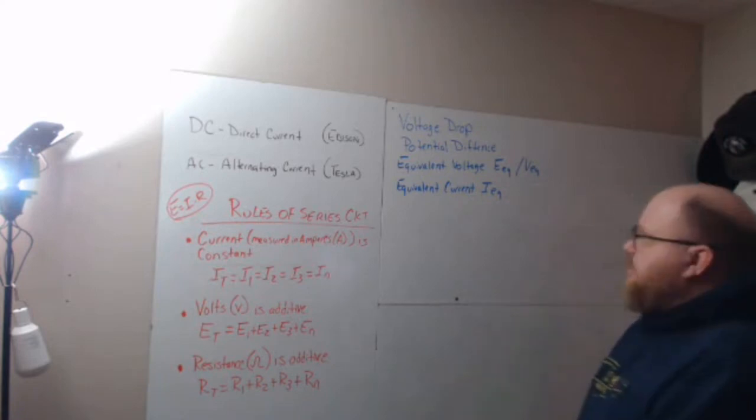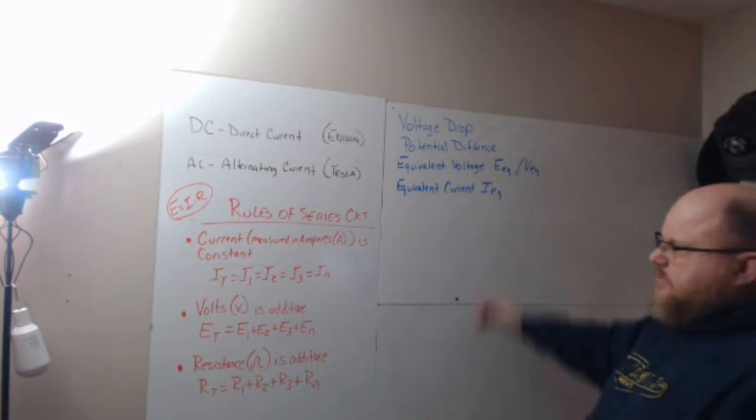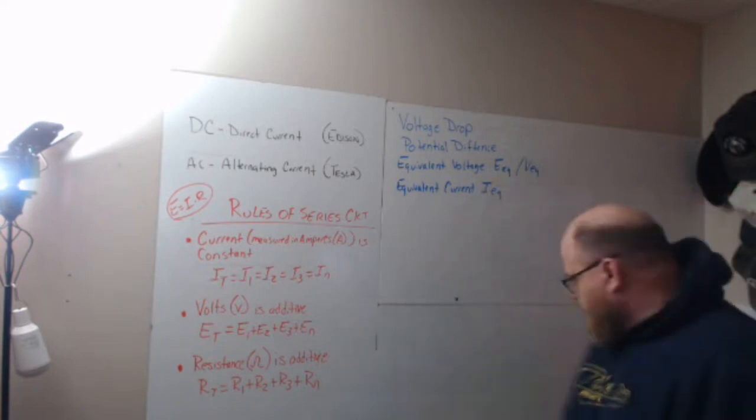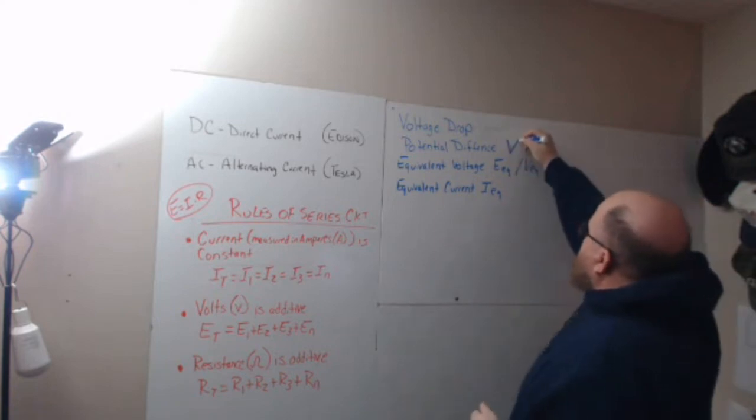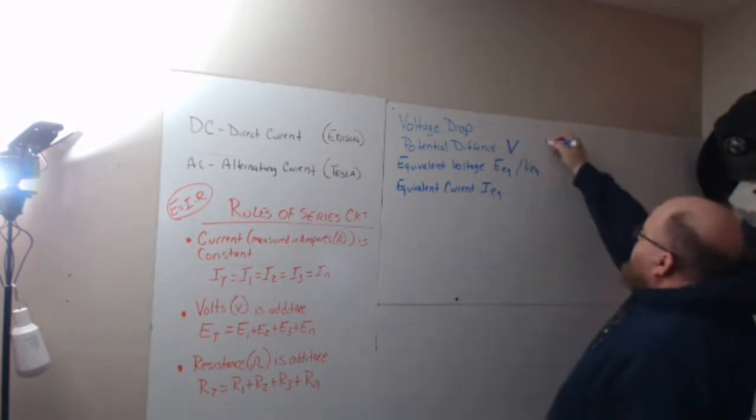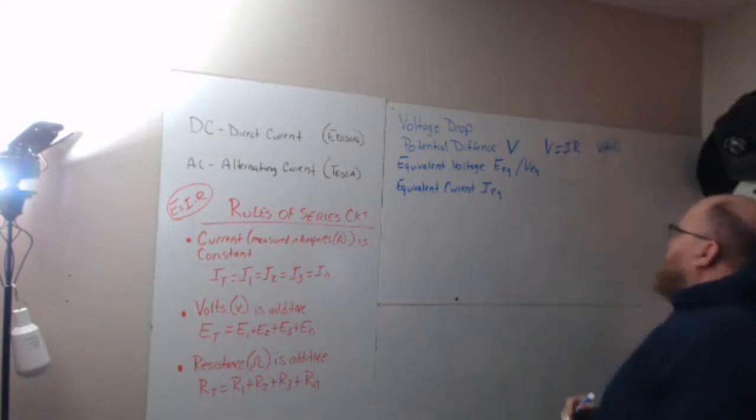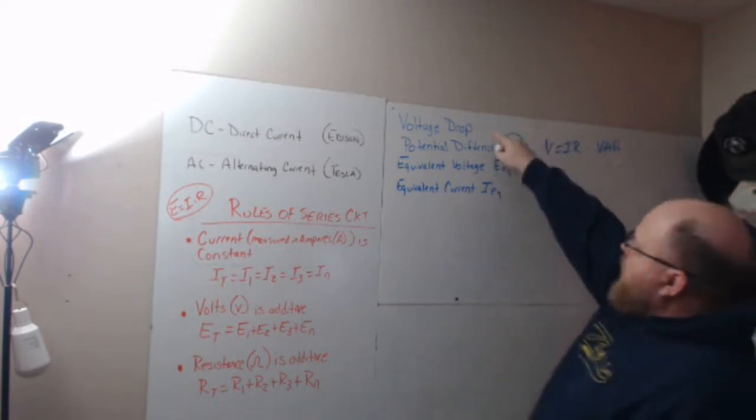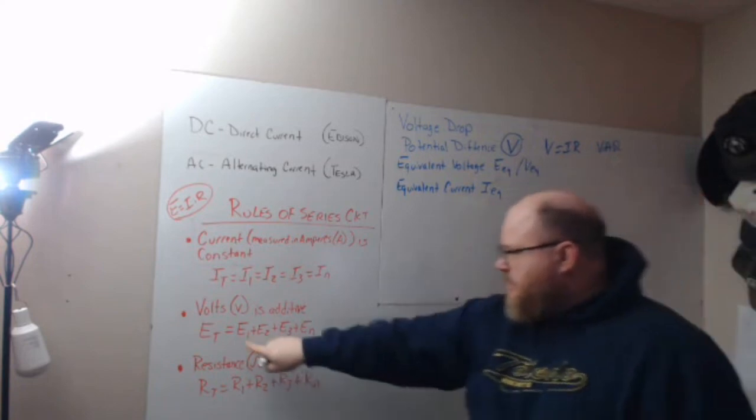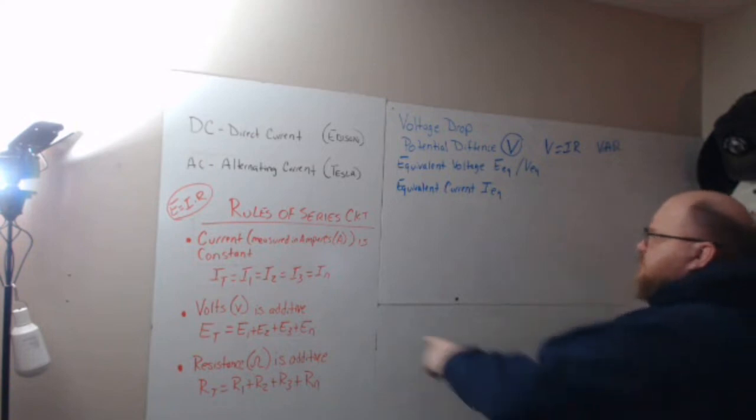Now, some of the other things we're going to need to talk about is voltage drop and potential difference. Potential difference is V. When you talk about in science class, we're going to teach V equals IR or V equals AR. Potential difference is V. Voltage drop is the voltage at each load. That's your voltage drop in a series circuit.